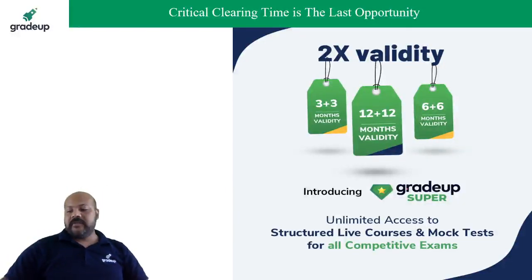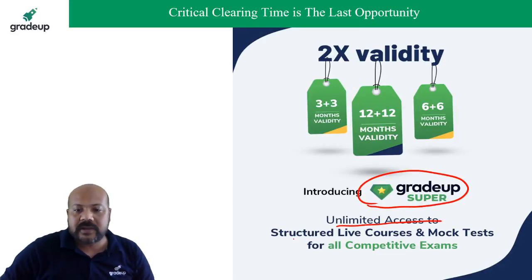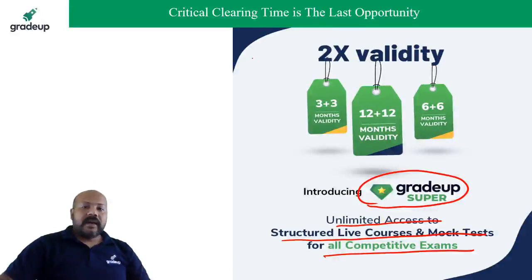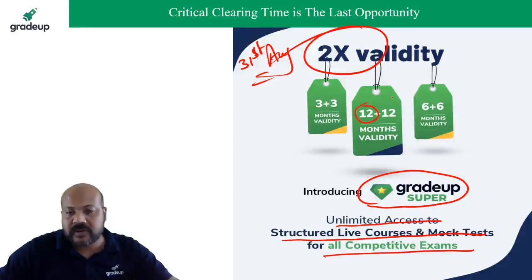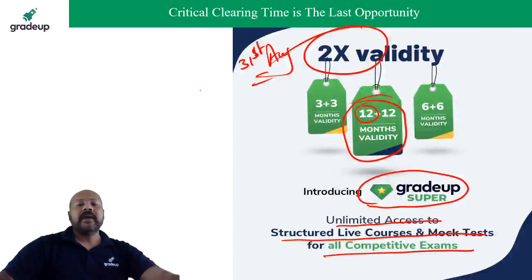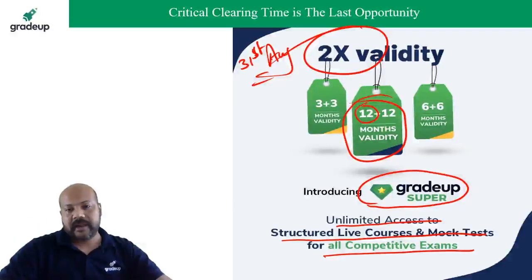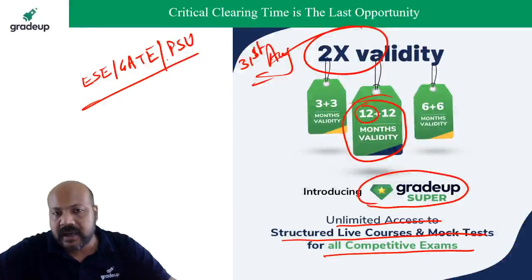One very important information: Gradeup App Super is going to bring you unlimited access to structured live courses and mock tests for all competitive examinations. If you join this subscription till 31st of August, you will be getting two times validity. It means if you go for a 12-month subscription, you will be getting 24 months validity and will be able to access all structured courses and mock tests for your exam category.